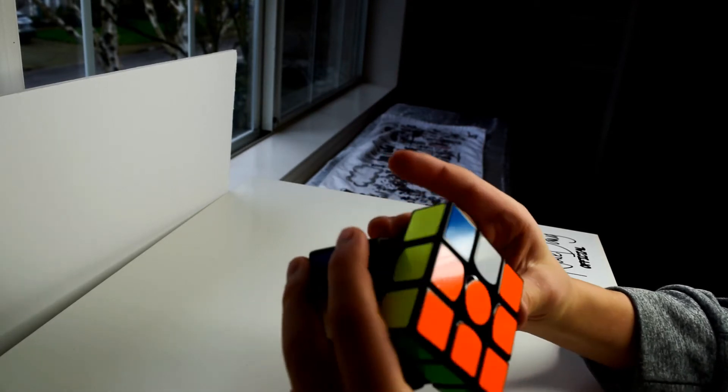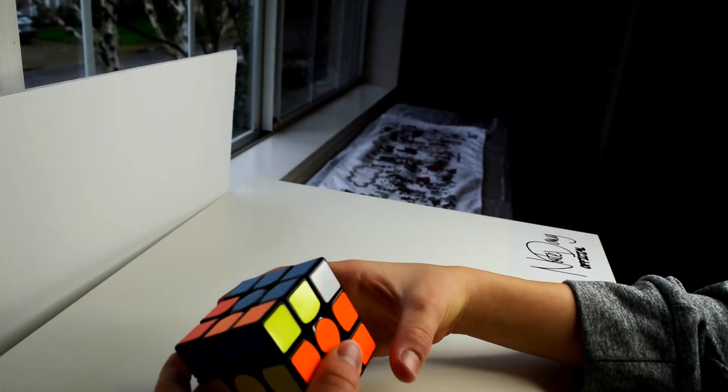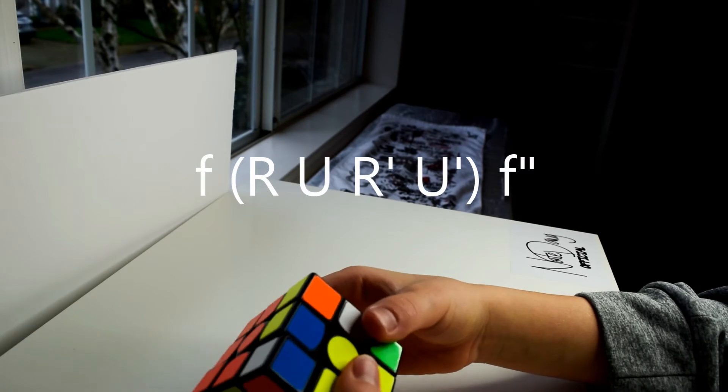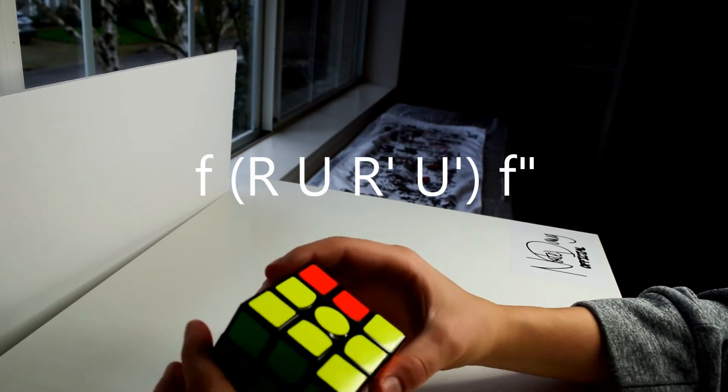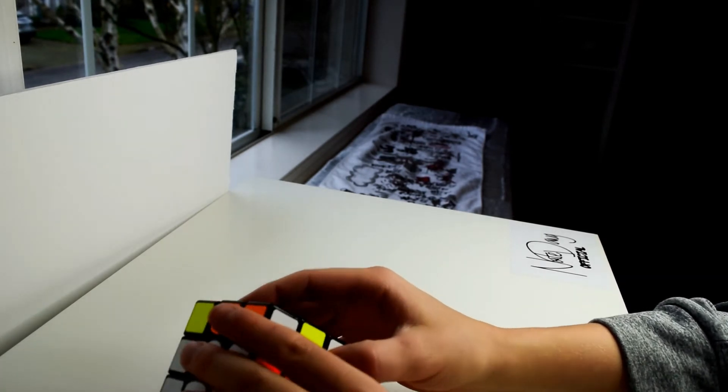And just do that a couple of times until you get something that looks like this. And from here you're going to want to go: small F, R, U, R inverted, U inverted, small F inverted. And that will complete the top. Now we're going to get the headlights.